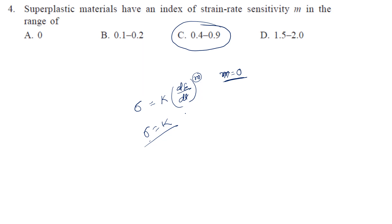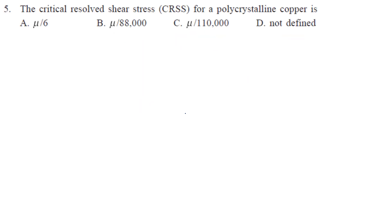Next question. The critical resolved shear stress CRSS for a polycrystalline copper is? See, the question is tricky. Here it is asked for a polycrystalline copper. Polycrystalline means it contains many grains.